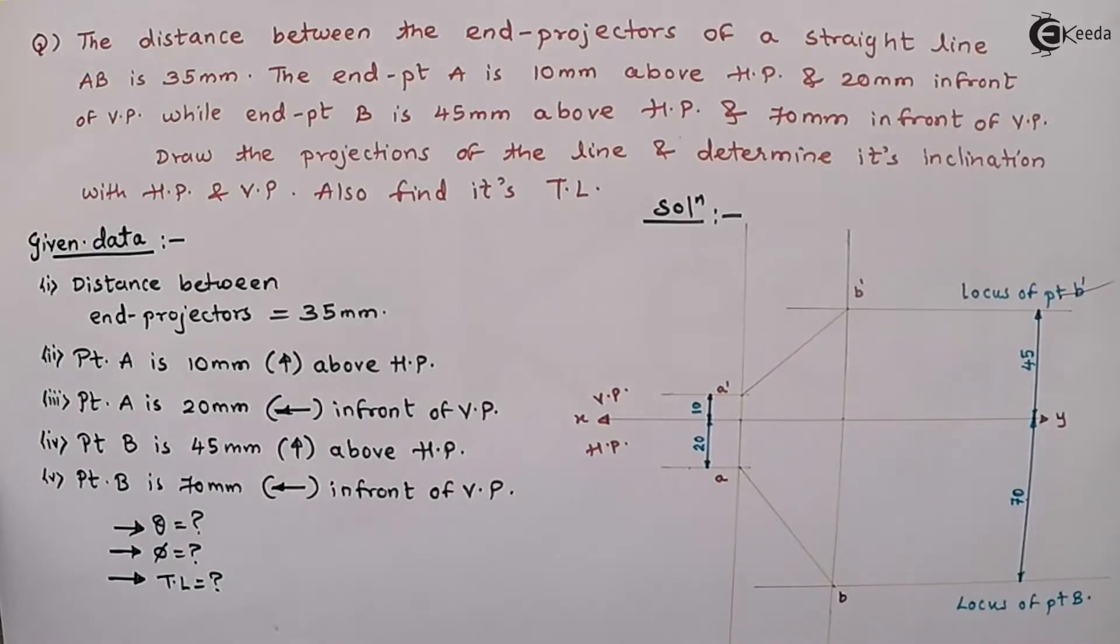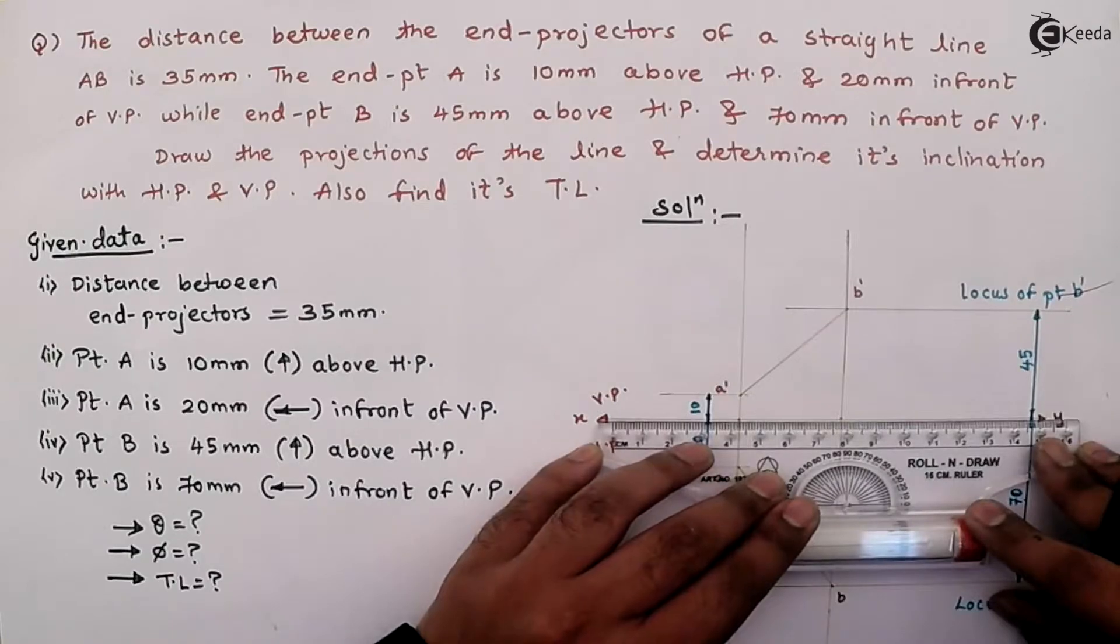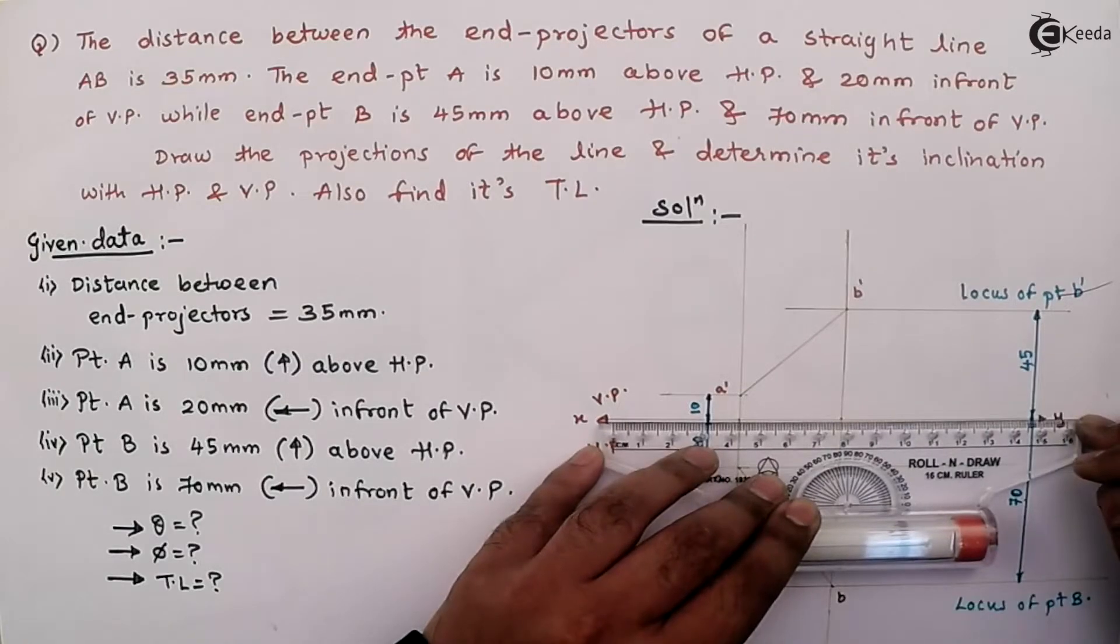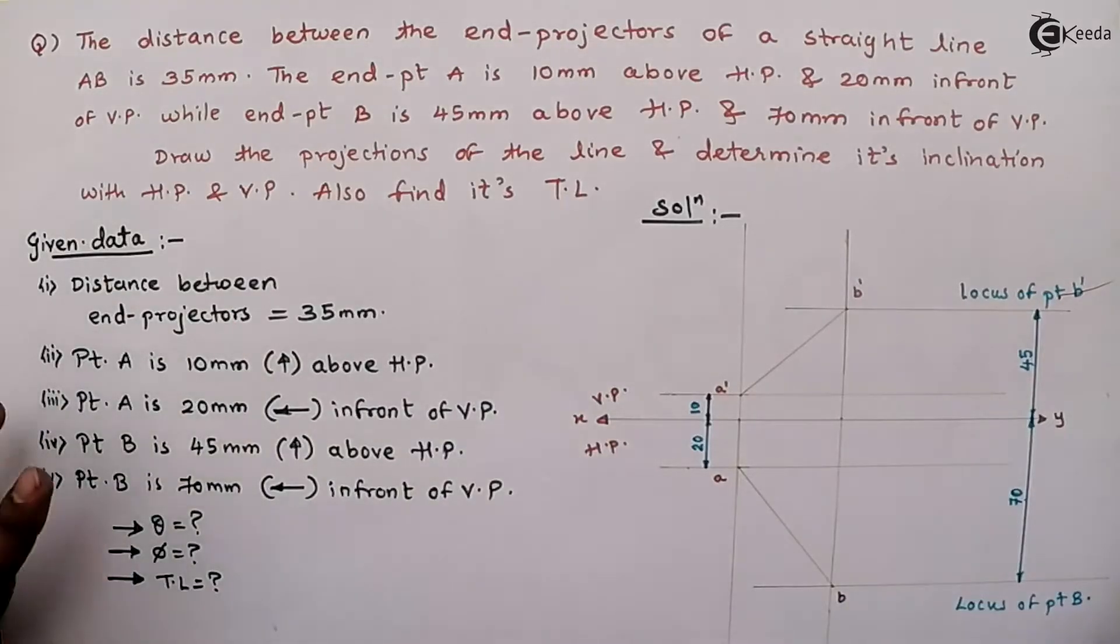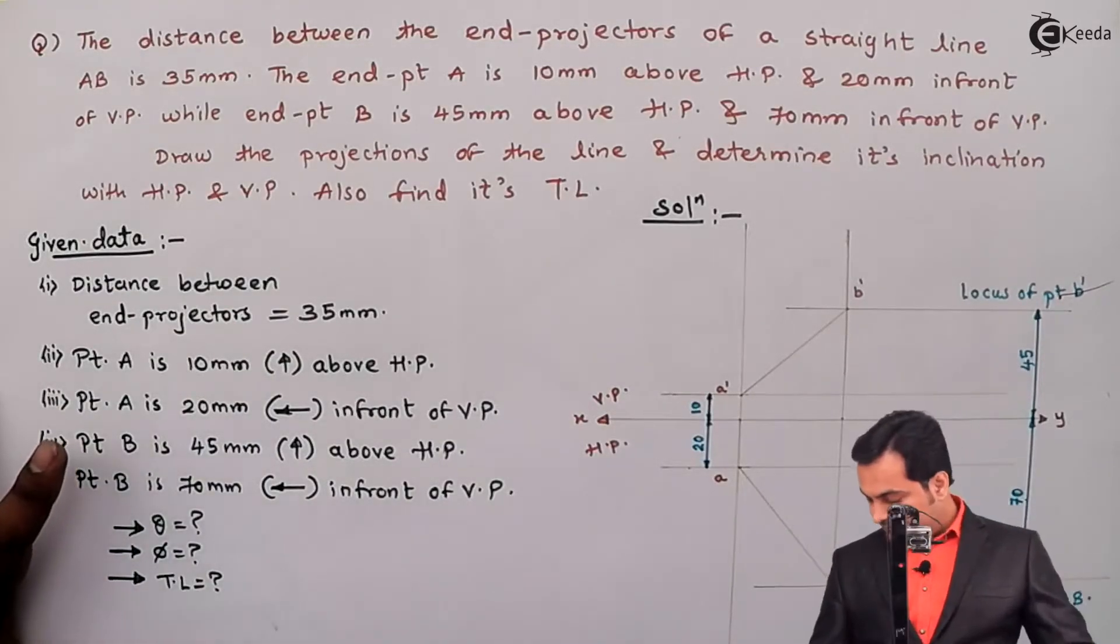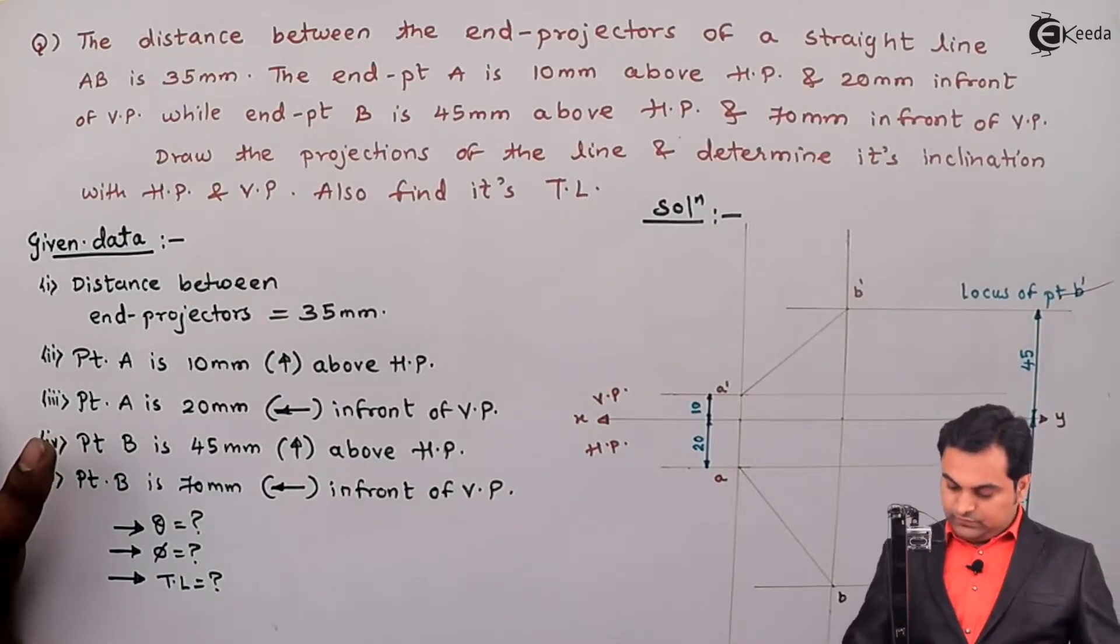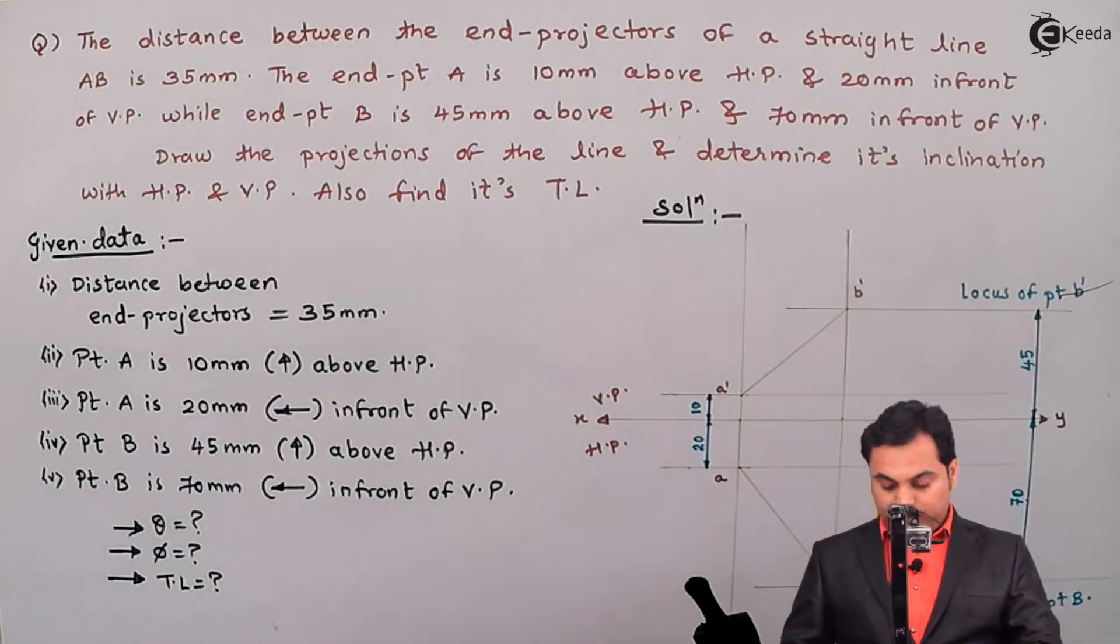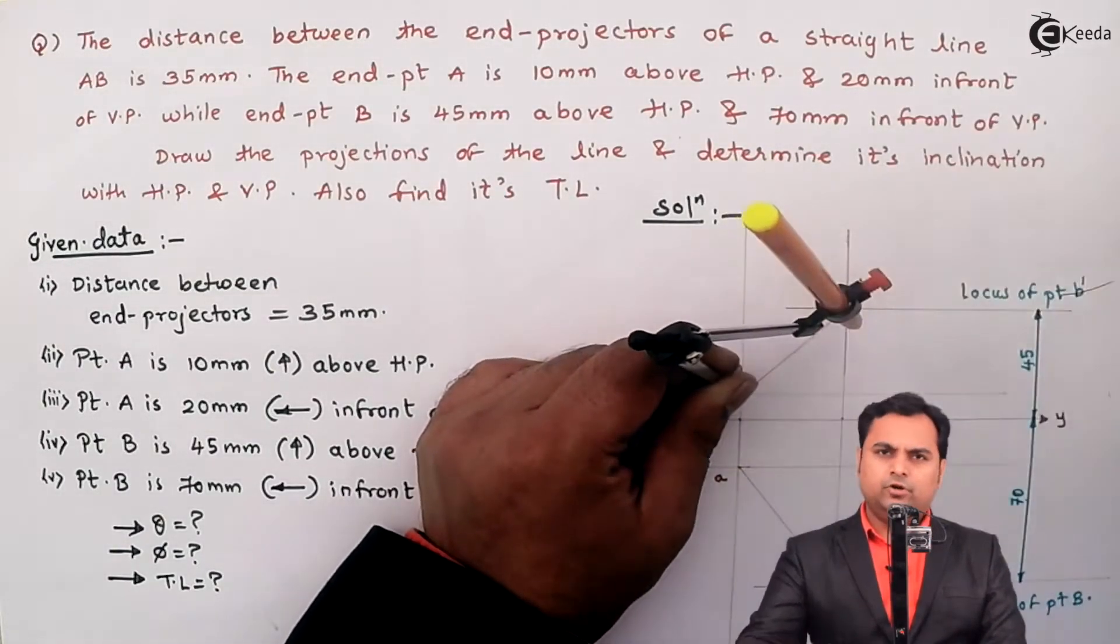Then I need to get the true length. So for that projecting a light line through point A, similarly through A'. After this, I will make this front view A' B' parallel with XY line because that is the procedure to get the true length.